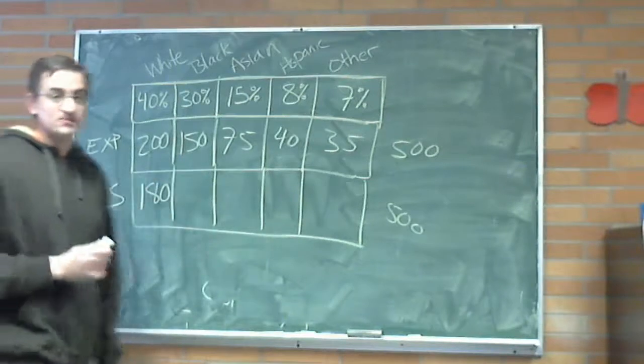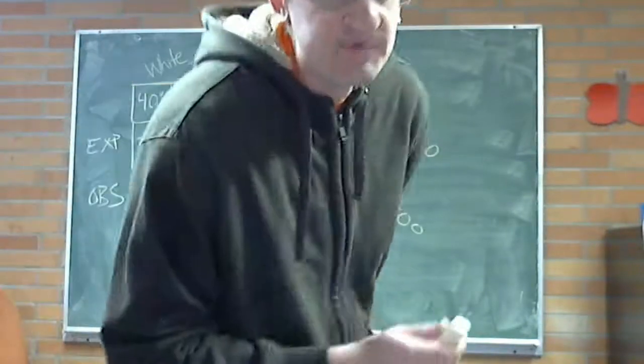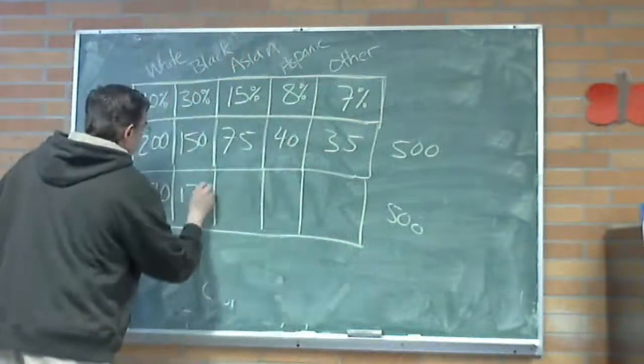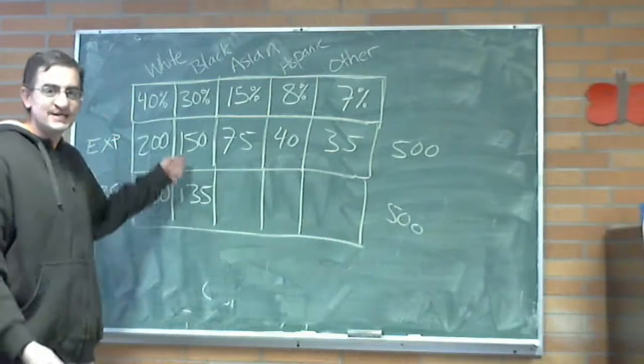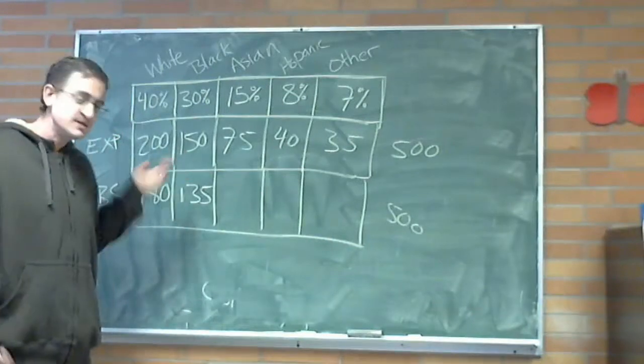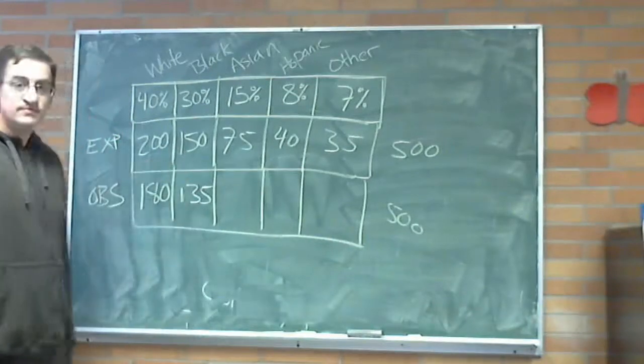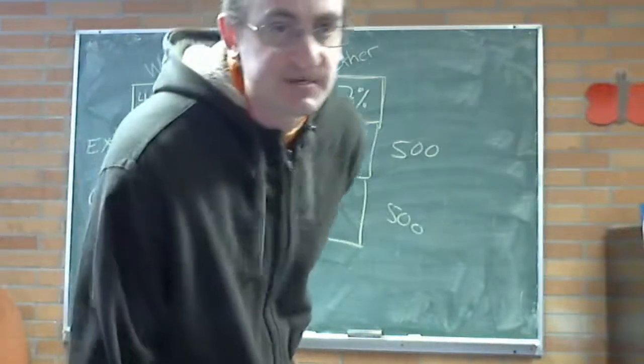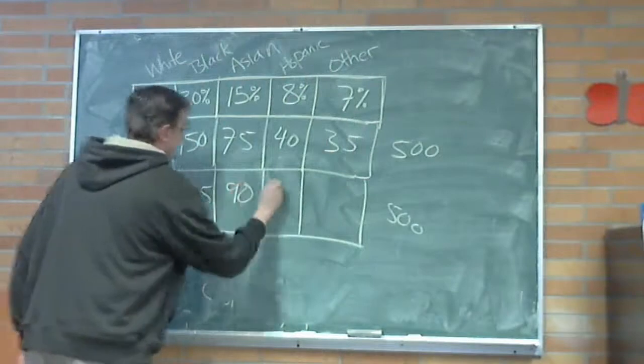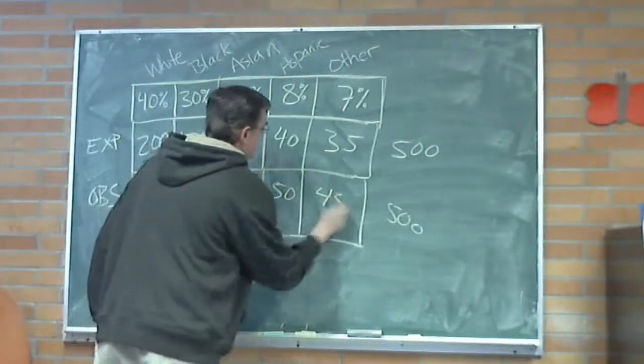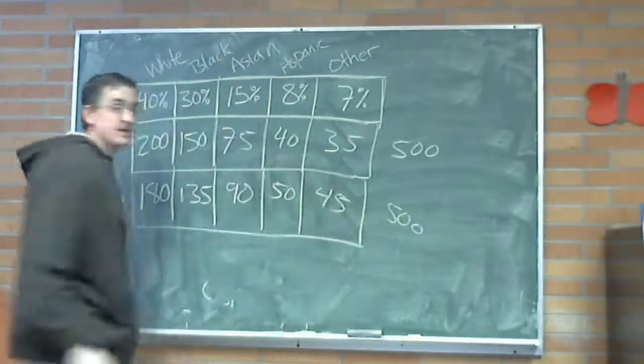What about for blacks? It's supposed to be 150. It was 135. Well, okay, it's not exactly 150, but come on, isn't that close? Is it close enough? Well, let's keep going and we can do a chi-squared test on this. 90, 50, and 45.